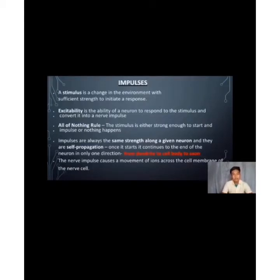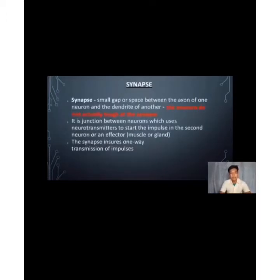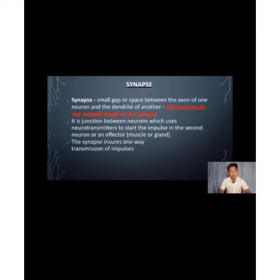The nerve impulse causes a movement of ions across the cell. A synapse is a small gap or space between the axon of one neuron and the dendrite of another. Neurons do not actually touch at the synapse. It is a junction between neurons that uses neurotransmitters to start the impulse in the second neuron or an effector such as a muscle or gland. The synapse ensures one-way transmission of impulses.